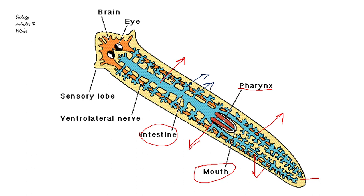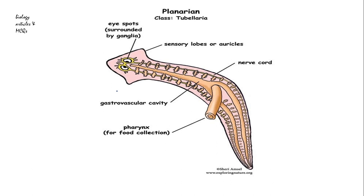Now how do all these structures help in digestion? First of all, planaria ingests prey by protruding its pharynx — it does not ingest prey only by the mouth. It moves out its pharynx from the mouth, similar to extending a trunk, to collect the food.